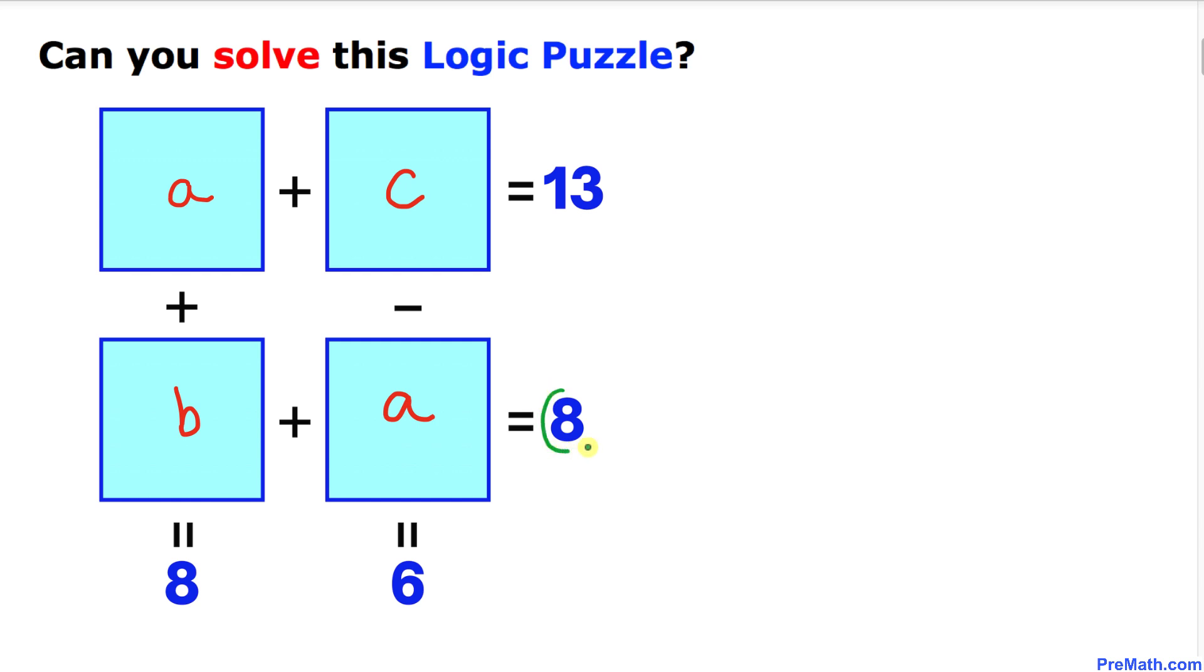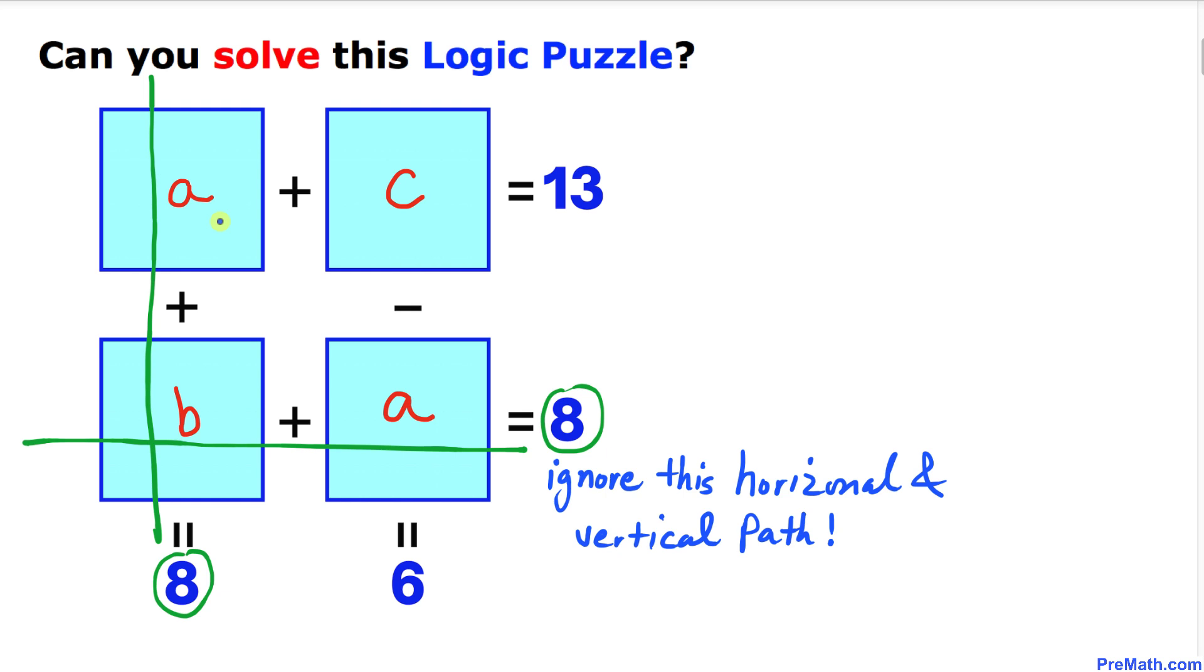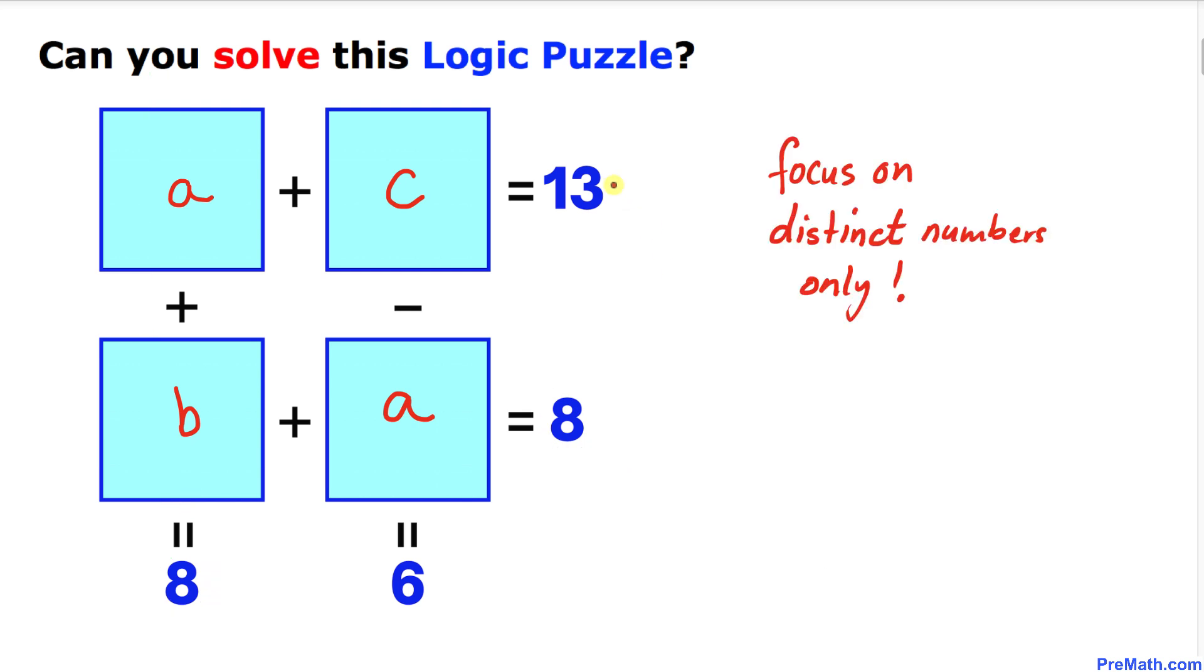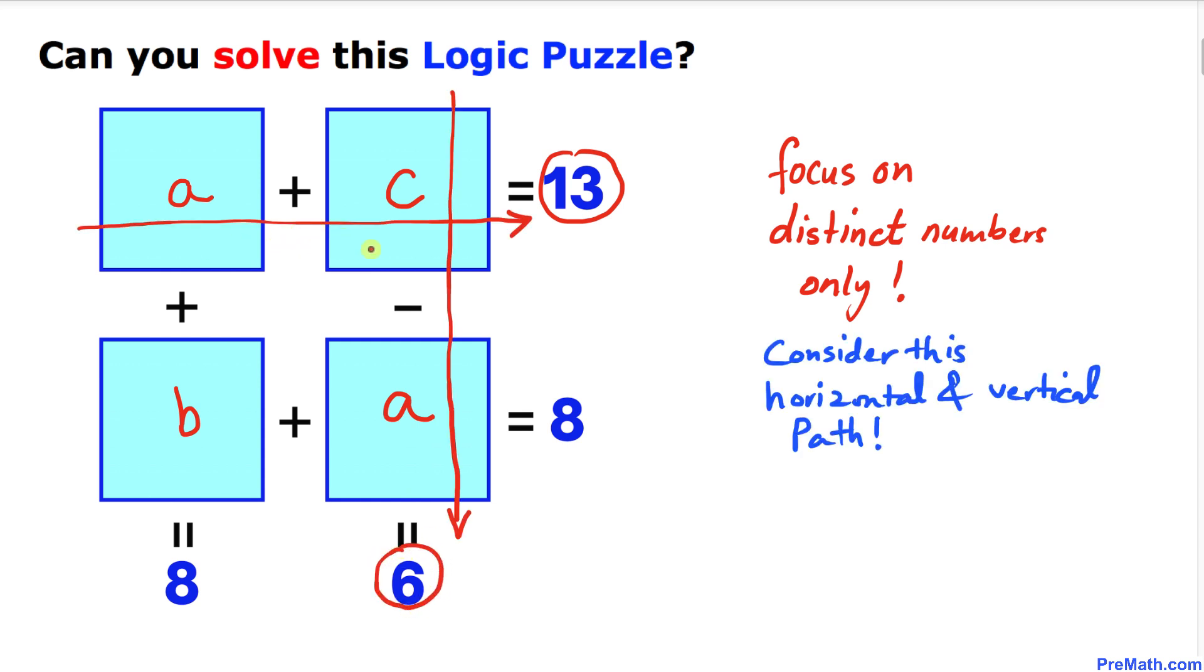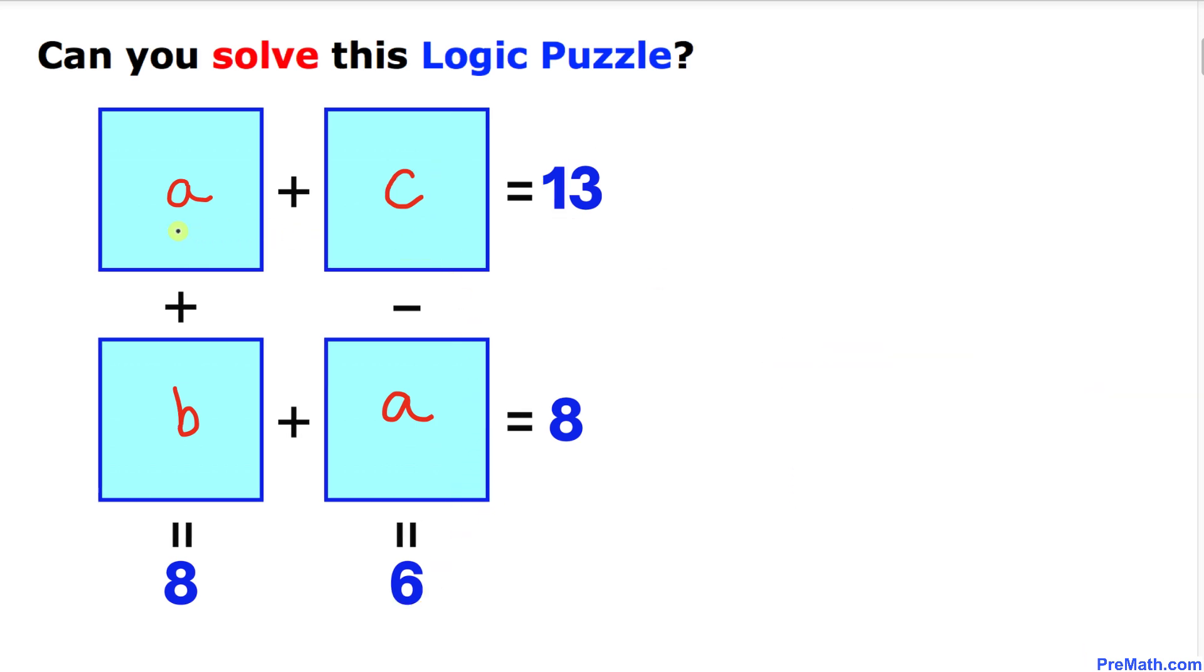Let's focus on these identical numbers, 8 and 8. We're going to ignore this horizontal and vertical path. Therefore, we'll focus on the distinct numbers only. We'll consider only this horizontal and vertical path. Let's consider the horizontal path first.